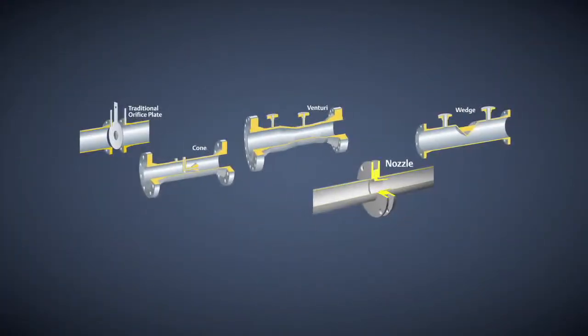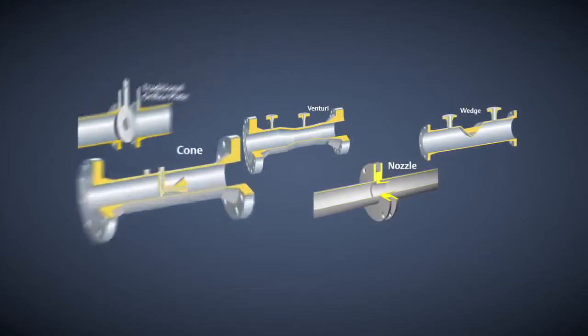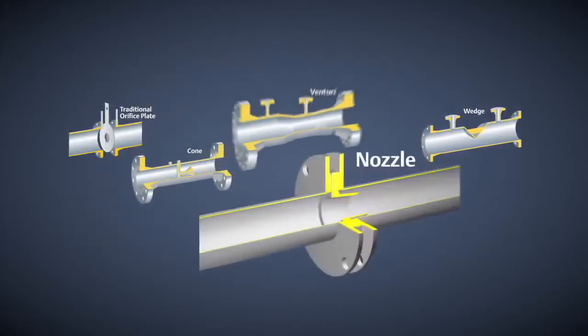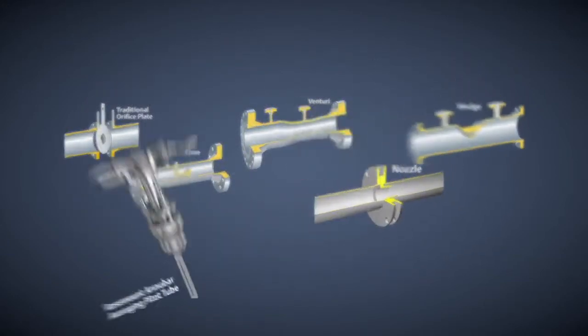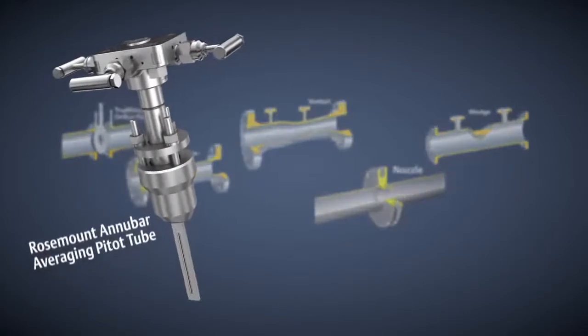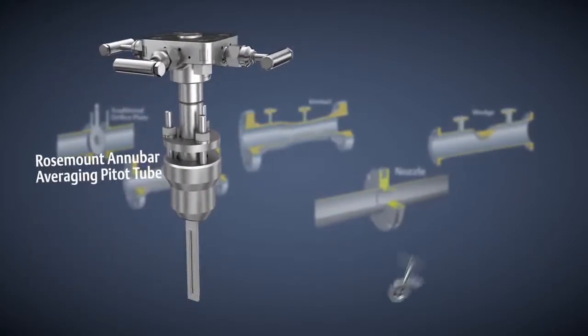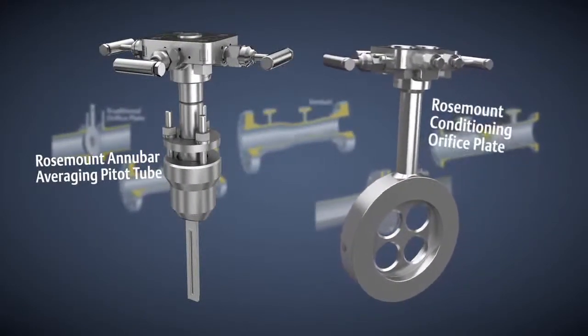There are many types of primary elements, including traditional orifice plate, cone, venturi, nozzle, wedge, Rosemount Annubar averaging pitot tube, and Rosemount conditioning orifice plate.